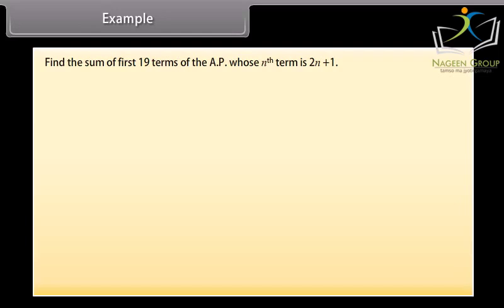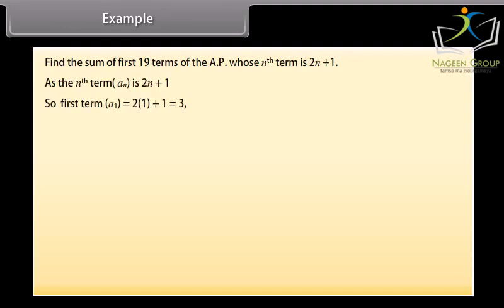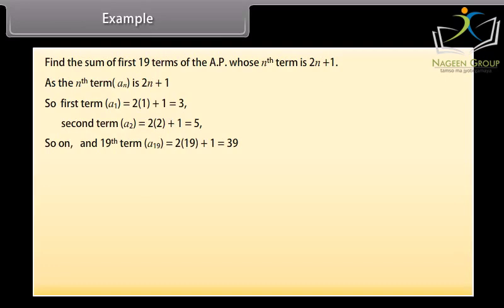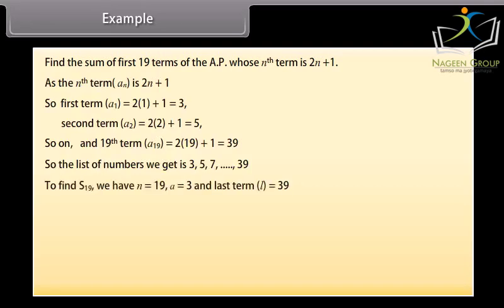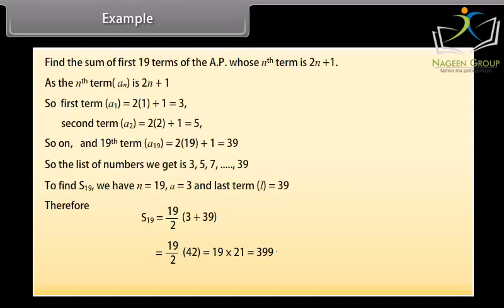Find the sum of first 19 terms of the AP whose nth term is 2n + 1. As the nth term an = 2n + 1, the first term a1 = 2(1) + 1 = 3, second term a2 = 2(2) + 1 = 5, and the 19th term = 2(19) + 1 = 39. So the list is 3, 5, 7, ..., 39. To find S19, we have n = 19, a = 3, and l = 39. Therefore S19 = 19/2 into (3 + 39) = 19/2 into 42 = 19 into 21 = 399. The sum of first 19 terms of the given AP is 399.